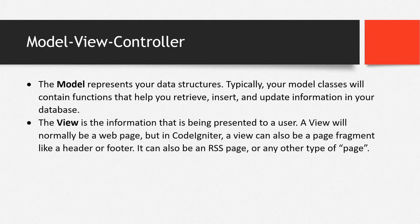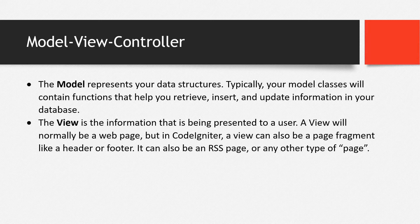The view is the information that is being presented to the user. A view will normally be a web page, but in CodeIgniter, a view can also be a page fragment like a header or footer, an RSS page, or any other type of page. Basically, the view is where the HTML codes or our template files go.